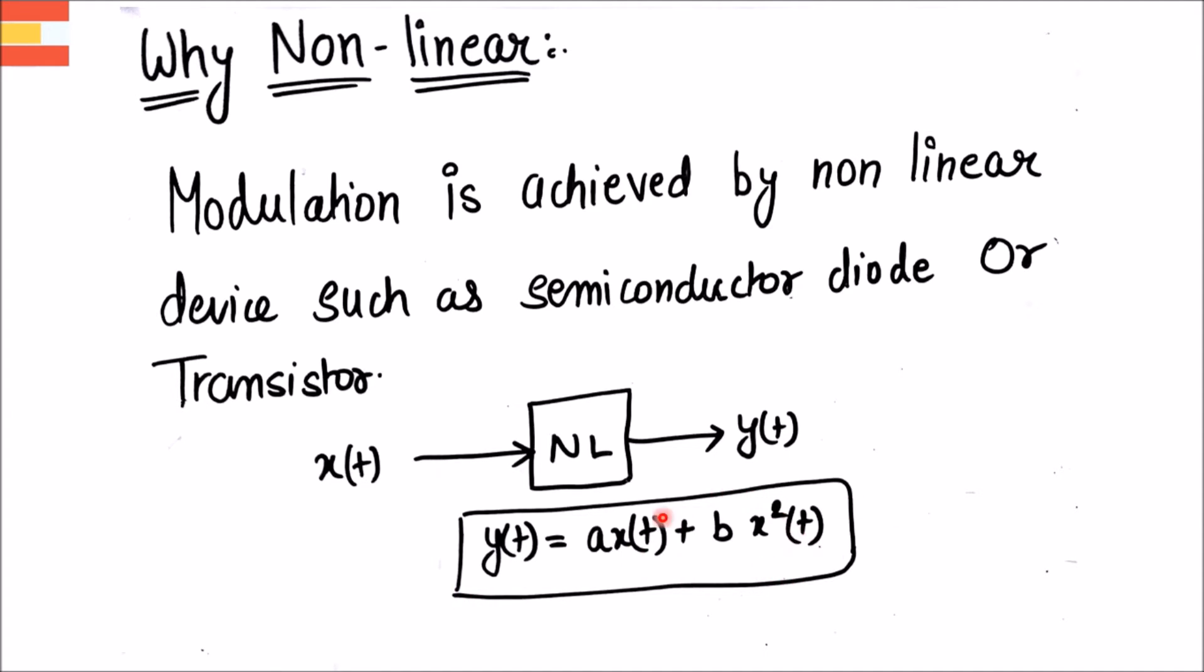But the major contribution is of x(t) and x²(t). So by approximation we can write y(t) as ax(t) plus bx²(t). Since in balanced modulator we use nonlinear elements, it is a type of nonlinear modulator.